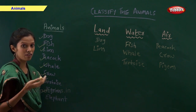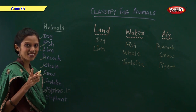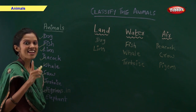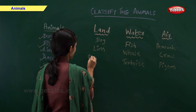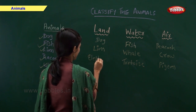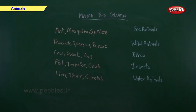Elephant — elephant is a land animal. Match the column. On one side I have written the examples of animals and on the other side I have written the types of animals. You have to match them.